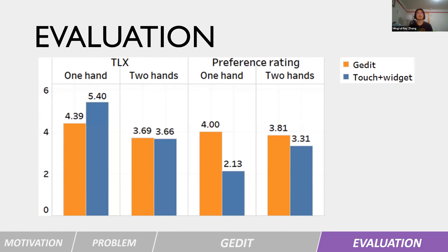We also measured the subjective rating scores, including the TLX task load and the preference rating. For one-hand mode, participants rated JADI with lower task load, mentioning that it is handy and convenient. However, for two-hand mode, the task load was similar. On the other hand, both modes were preferred over the touch plus widget technique, confirming that on-keyboard gestures were convenient and favorable.